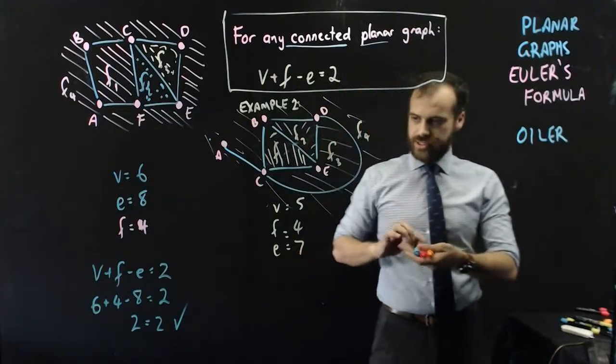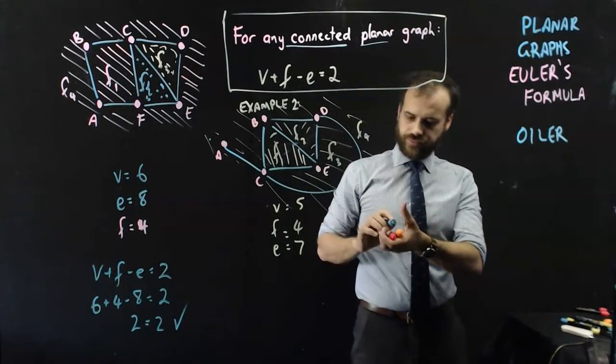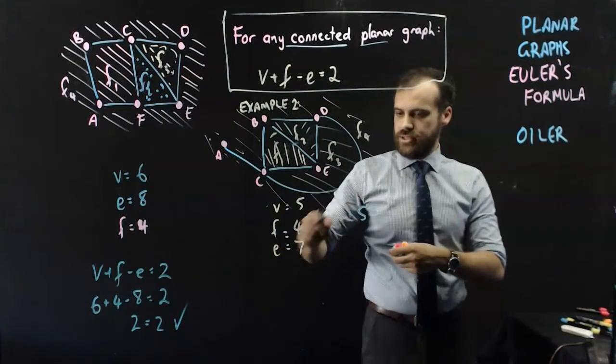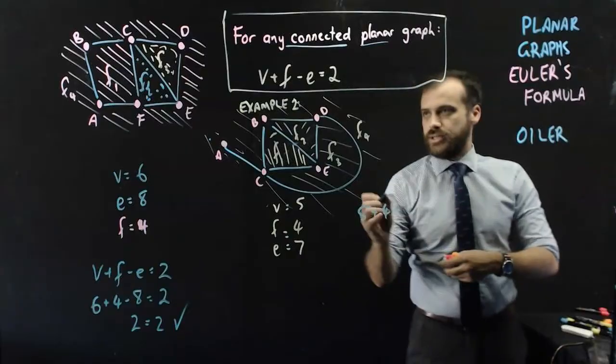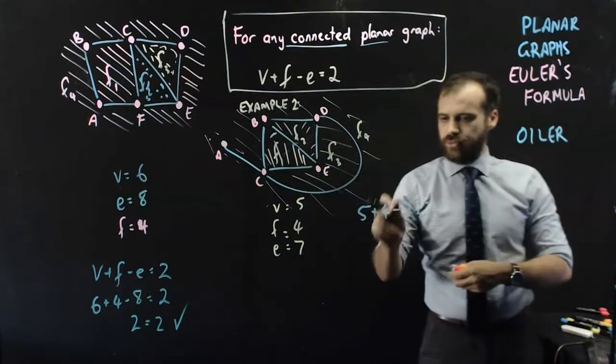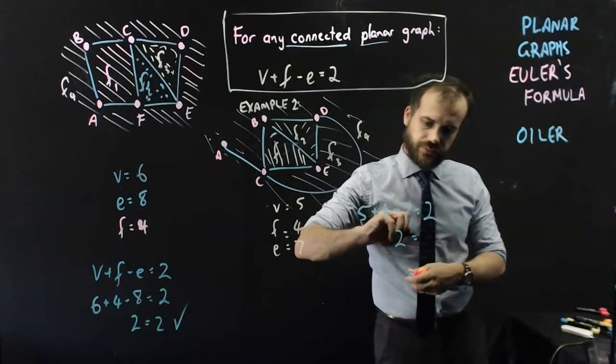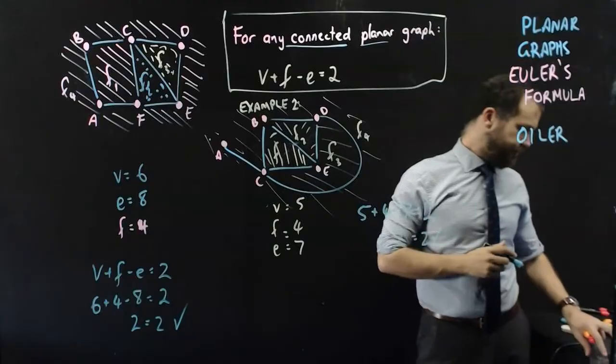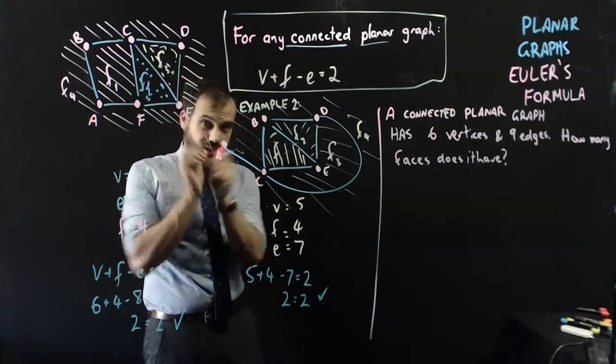Now, our formula says that V, five, plus faces, four, minus edges, seven, equals two. Five plus four minus seven. Great. Euler is still correct. Alright. So I've got a little space in here to talk. I'm just going to do this question here.